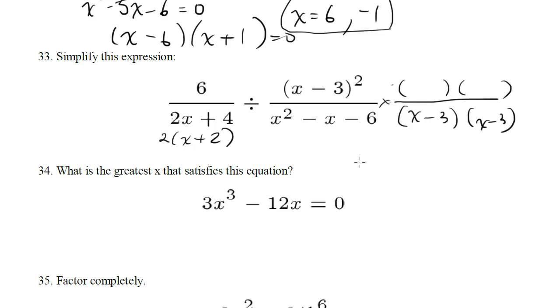Now this guy, we can factor this quadratic. Two numbers that multiply out to negative 6 and add up to negative 1. So that's going to be x minus 3, x plus 2.